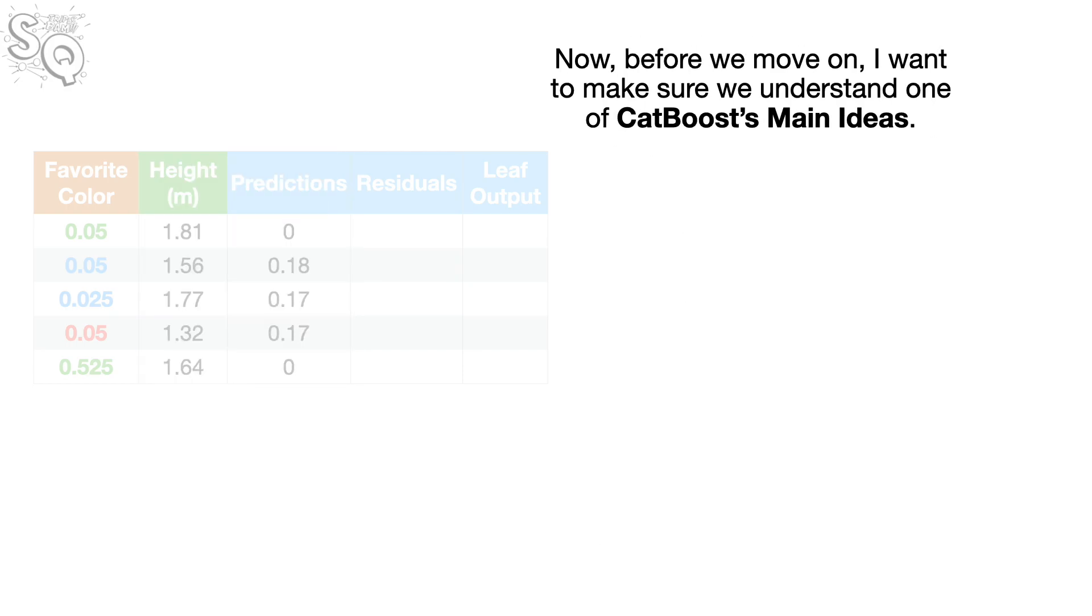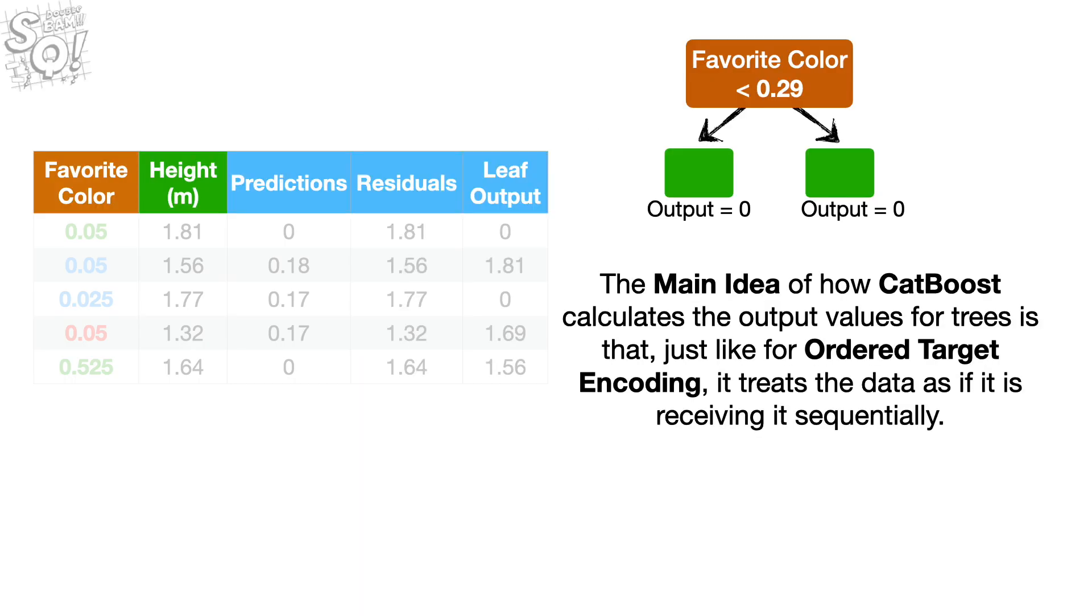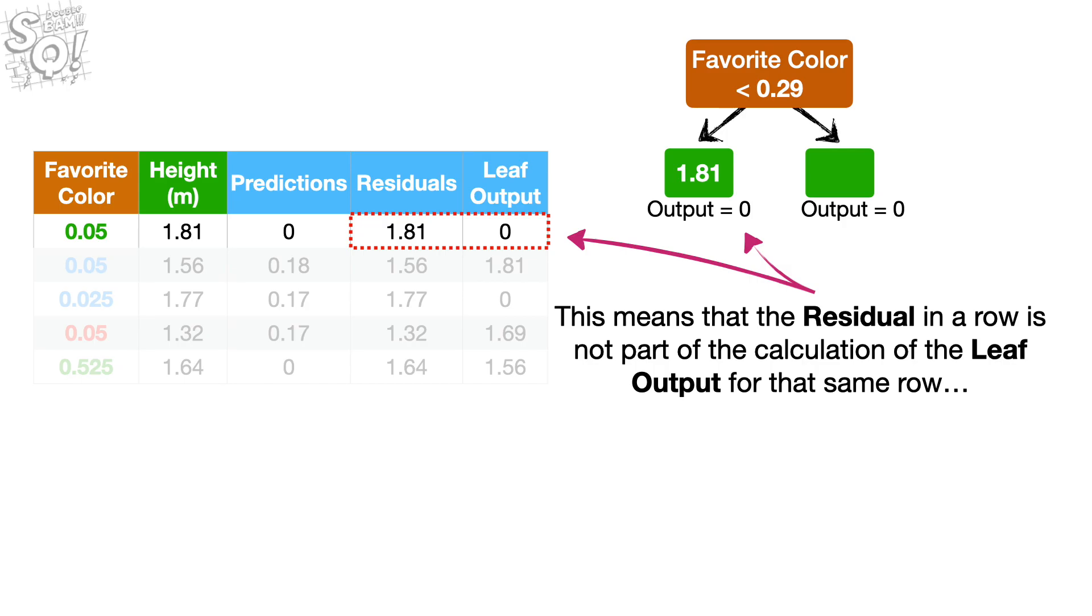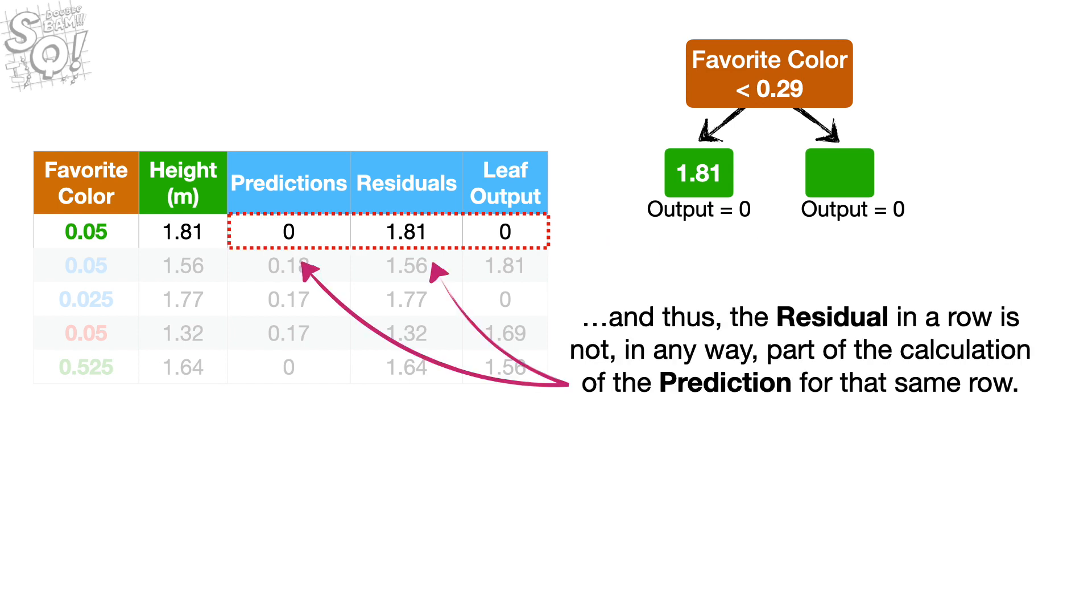Now, before we move on, I want to make sure we understand one of CatBoost's main ideas. The main idea of how CatBoost calculates the output values for trees is that, just like for ordered target encoding, it treats the data as if it was receiving it sequentially. This means that the residual in a row is not part of the calculation of the leaf output for the same row. And thus, the residual in a row is not, in any way, part of the calculation of the prediction for that same row. And this avoids leakage, just like it does for ordered target encoding. Bam.